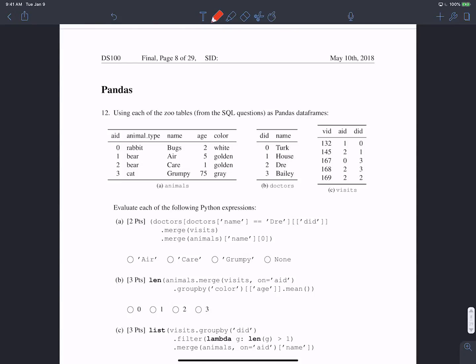Now let's take a look at the pandas section of the exam. We're dealing with the same three tables as we were in the previous SQL question: animals, doctors, and visits. Question 12a asks us to evaluate this expression.